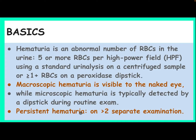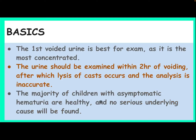Persistent hematuria is defined as occurring on more than 2 separate examinations. The first voided urine is the best for examination as it is the most concentrated. The urine should be examined within two hours of voiding, after which lysis of the cast occurs and the analysis is inaccurate. The majority of children with asymptomatic hematuria are healthy, and no serious underlying cause will be found.